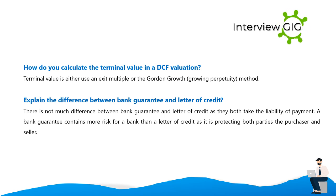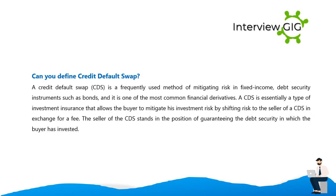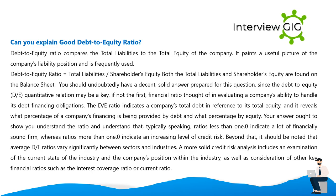Explain the difference between bank guarantee and letter of credit. There is not much difference as both take on the liability of payment; however, a bank guarantee contains more risk for a bank than a letter of credit, as it is protecting both parties — the purchaser and seller. Can you define credit default swap (CDS)? A CDS is a frequently used method of mitigating risk in fixed income debt security instruments such as bonds and is one of the most common financial derivatives. A CDS is essentially a type of investment insurance that allows the buyer to mitigate investment risk by shifting it to the CDS seller in exchange for a fee; the seller stands in the position of guaranteeing the debt security.